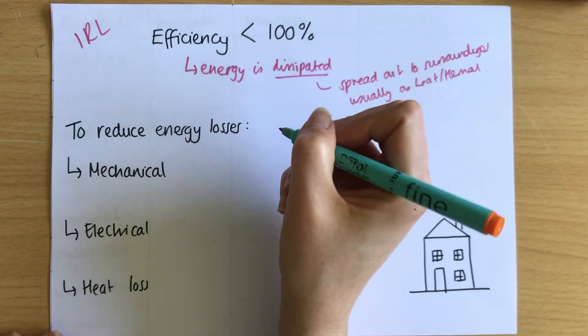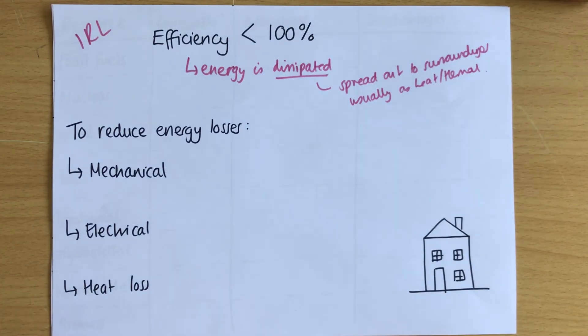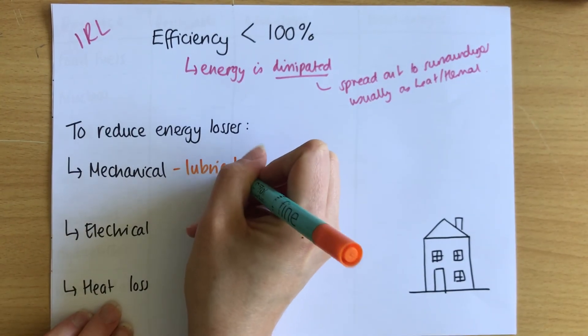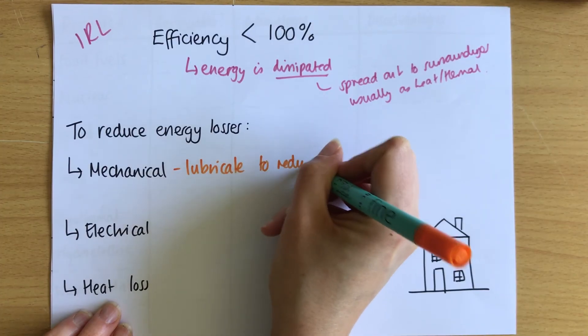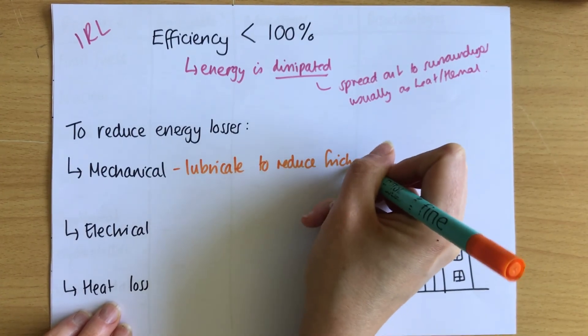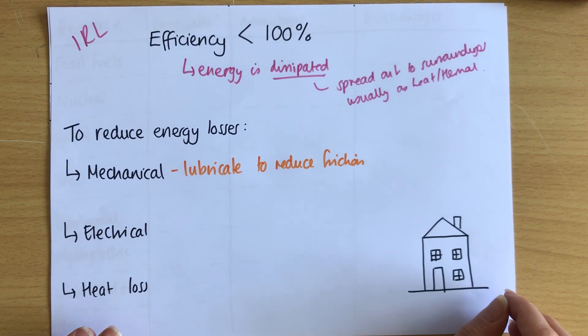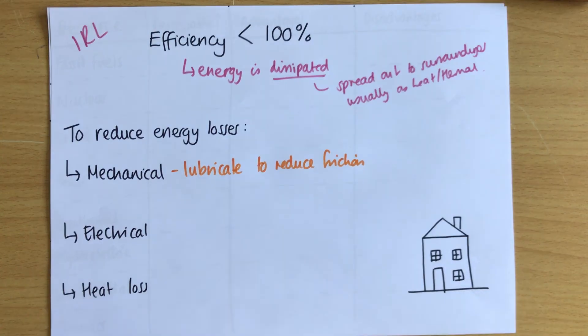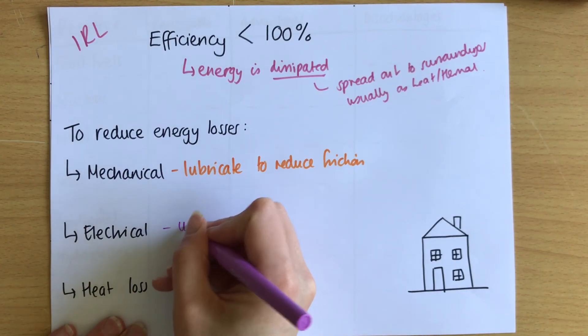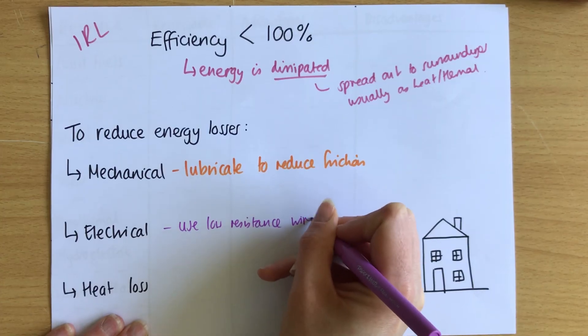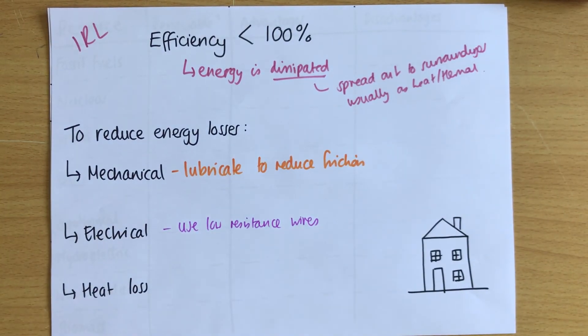Now we need to know how we can reduce these energy losses to try and make the efficiency as close to 100% as possible. And these are just things to learn. If you've got a mechanical system that's of moving parts to reduce energy losses, you lubricate to reduce friction. Because when you reduce friction, you reduce the work done against the friction. And you reduce how much heat is being lost to it. So lubricating to reduce friction will reduce energy losses for mechanical systems. For electrical systems, we use low resistance wires. So less energy is lost as heat.